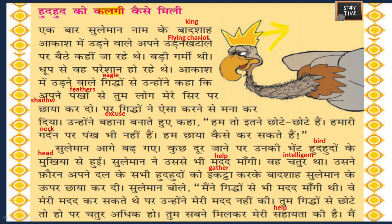The king asked the eagles to give him shadow with their feathers. Giddo means eagles, panko means feathers, chaya means shadow. But the eagles refused to do so. They excused themselves saying, 'Hum do itne chote chote hain' - we are very small, and 'humari gardhan par pank bhi nahi hain' - we don't have feathers on our neck. So how can we give shadow?